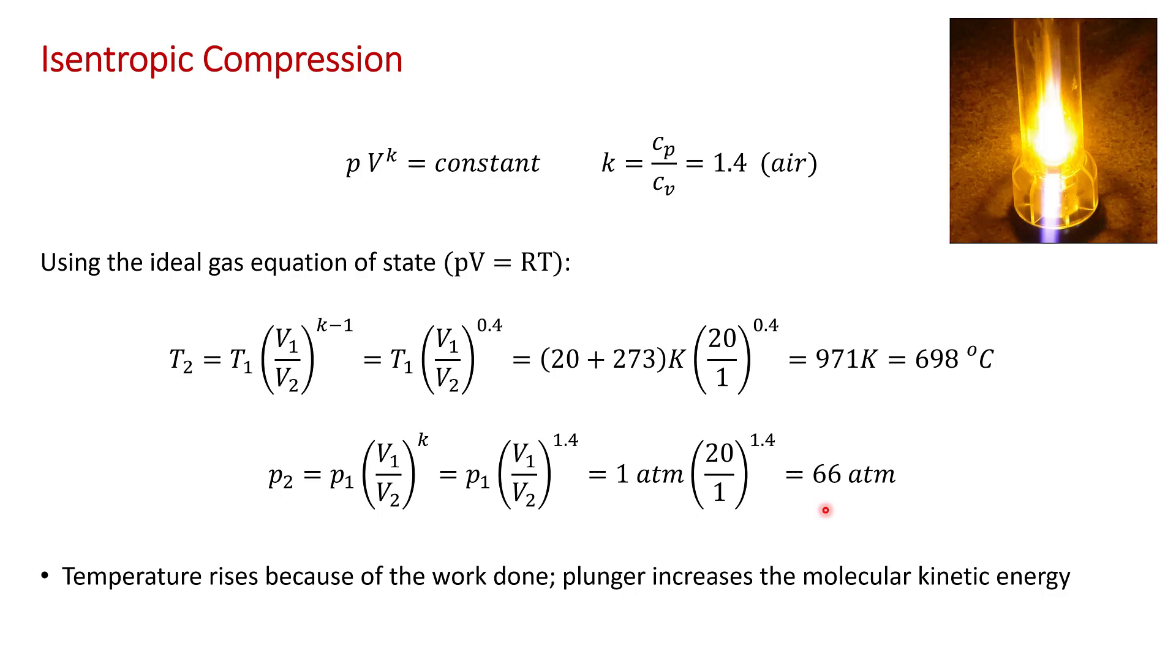So that's the basic thermodynamics calculation for isentropic compression, but you still might be wondering what's physically going on to cause the temperature of the air to rise. Well, there's at least two equivalent ways to think about this. One is the temperature rises because you're doing work on the system. A force is applied through a distance to compress the piston and that work is being added to a relatively small mass of air.